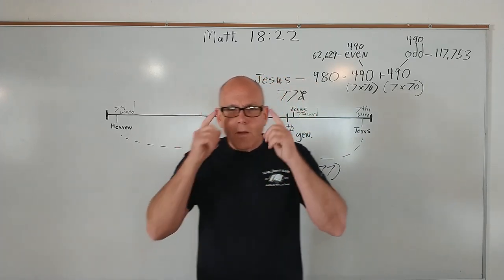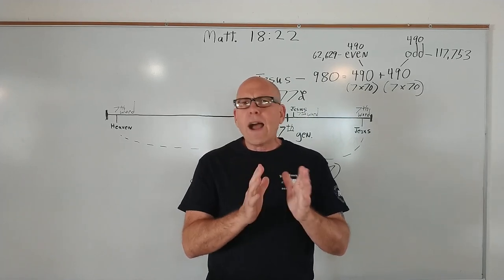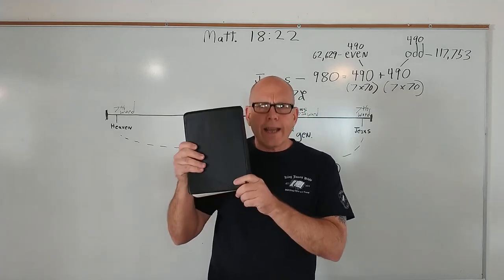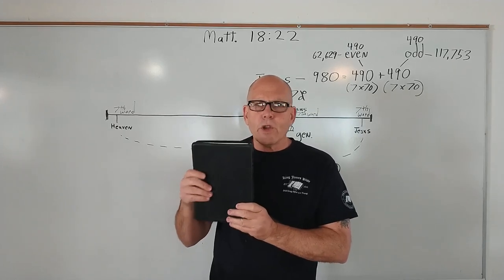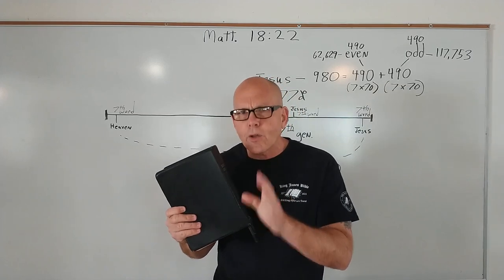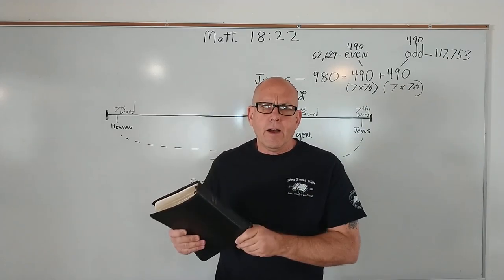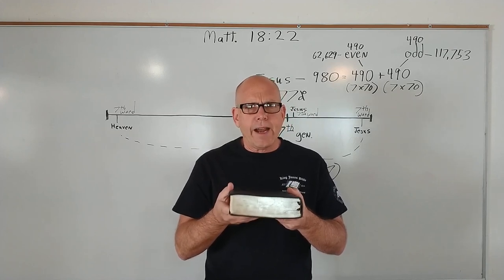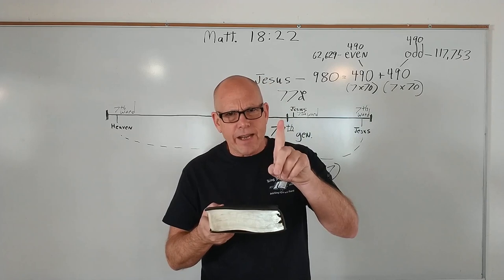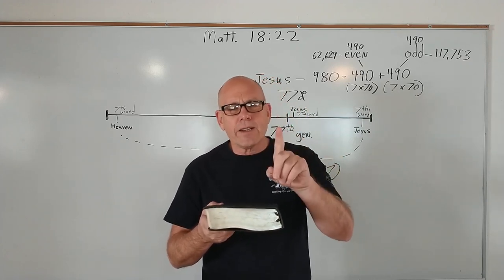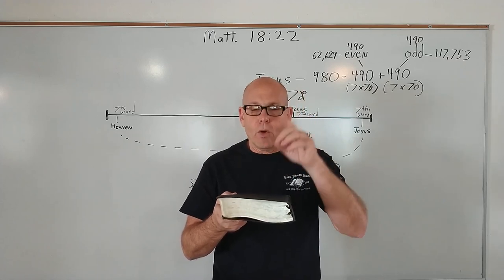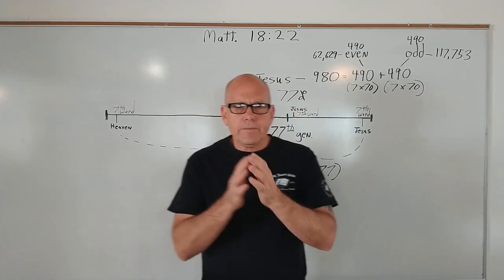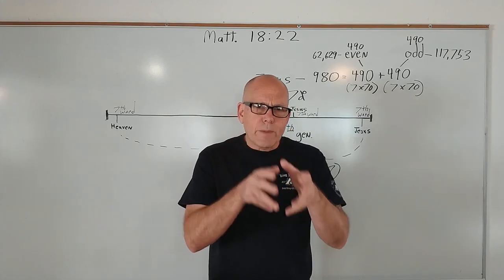So, back in eternity past, before the foundation of the world, God had this book in mind. God had the King James Bible in his mind. When you go over there in the Old Testament, he says, seek ye out the book of the Lord, the book. This is the book. He promised in Psalms 12, 6 and 7, that the words of the Lord were pure words, as silver tried in the furnace of earth. Purified seven times. Remember that. That's going to be important. Purified seven times. He said, thou shalt keep them, O Lord. Thou shalt preserve them from this generation forever.